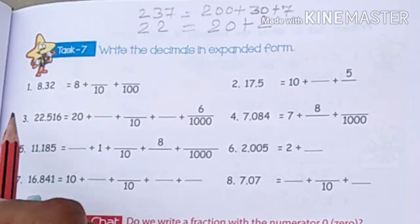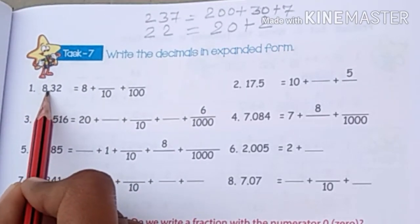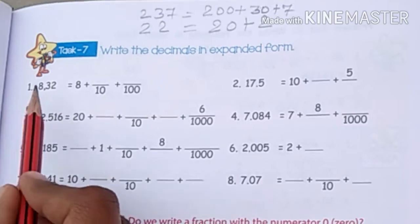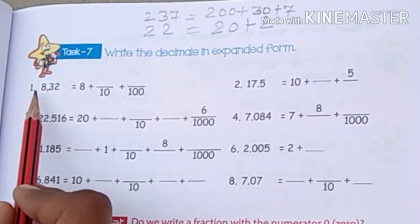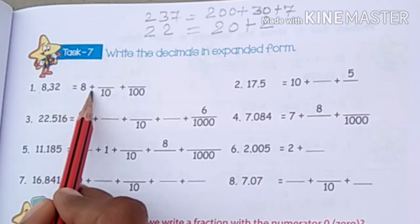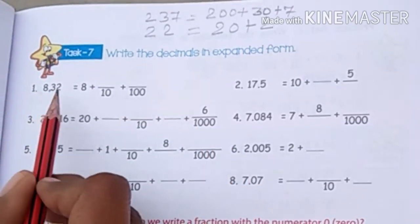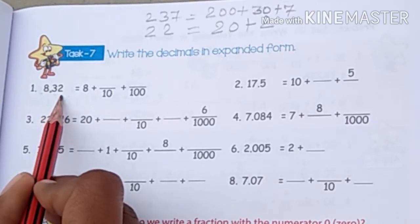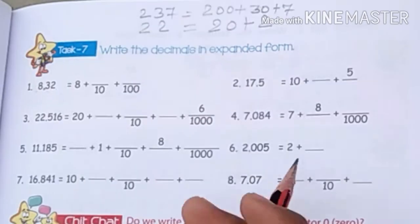The first question is 8.32. We call the dot a decimal point. So in 8.32, the digit 8 is in the ones place. The digit 3 is in the tenths place — the first digit after the decimal is tenths. The second digit after the decimal is hundredths, and the third digit would be thousandths.